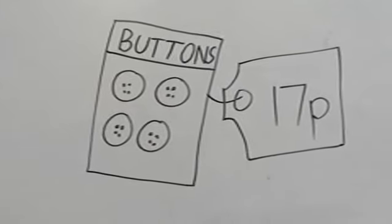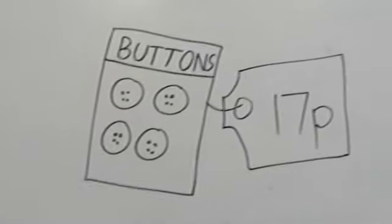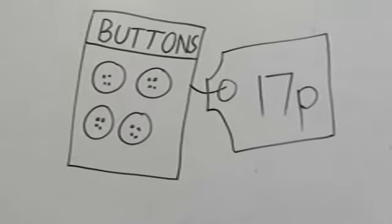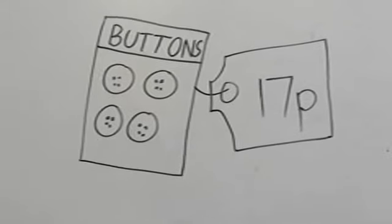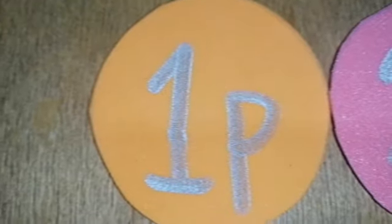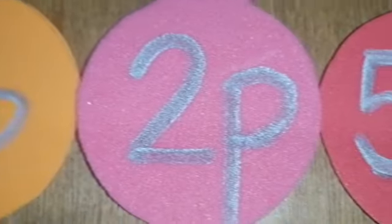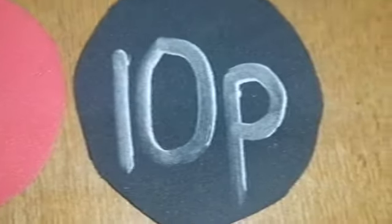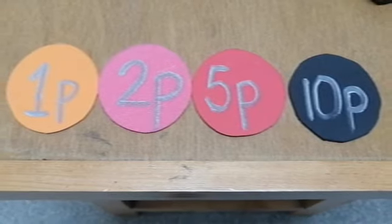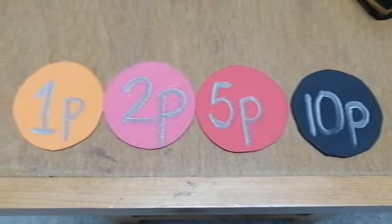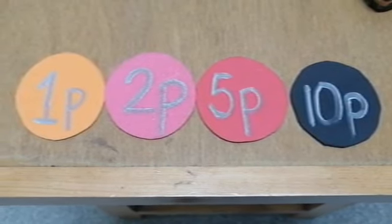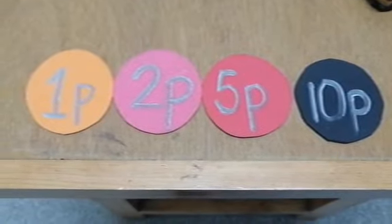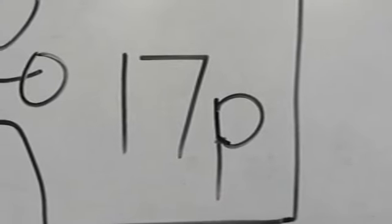Pre-class, we want to buy this pack of buttons, and the cost of this pack is 17 paisas. Hum is button ke pack ko kharidna chahate hain, aur iski price hai 17 paisa. We have 1 paisa, 2 paisa, 5 paisa, and 10 paisa coins. The total amount we need is 17 paisa.